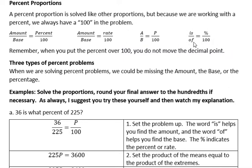Another thing you might see is this helpful proportion: is over of equals percent over 100. The word 'is' is associated with the amount, and the word 'of' is associated with the base in certain types of problems, so this can be helpful. Remember that when you're using this proportion with 100 on the bottom, you don't move the decimal point because dividing by 100 would already be changing that decimal point.